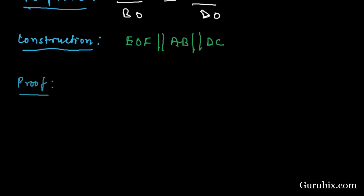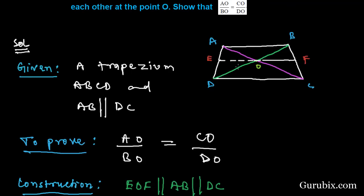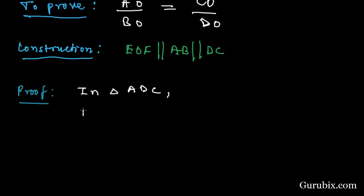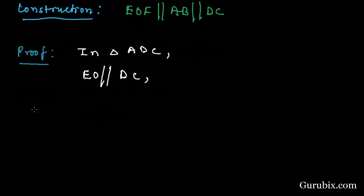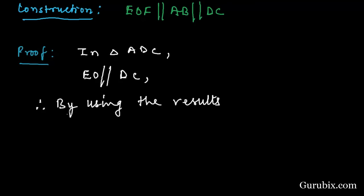For that we shall start with triangle ADC. In this triangle, EO is parallel to DC. Therefore, by using the results of BPT...